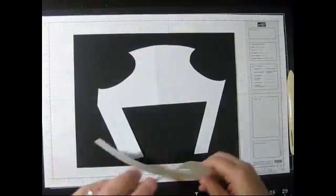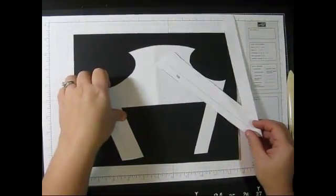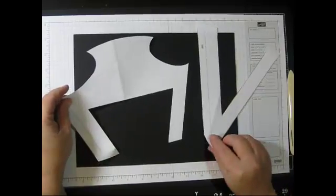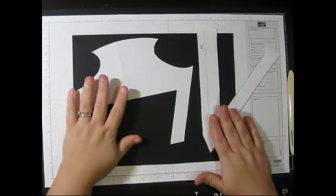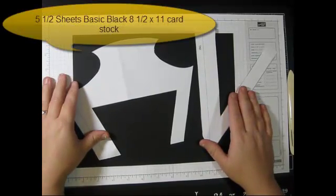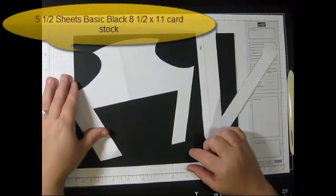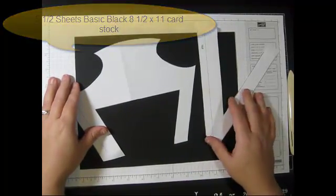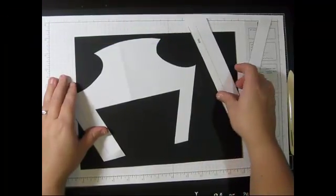I have a couple of templates that you need to download off of the site. It comes in two pieces because it is rather large, so you will need five and a half pieces of basic black cardstock and you will need three pieces of vellum cardstock.